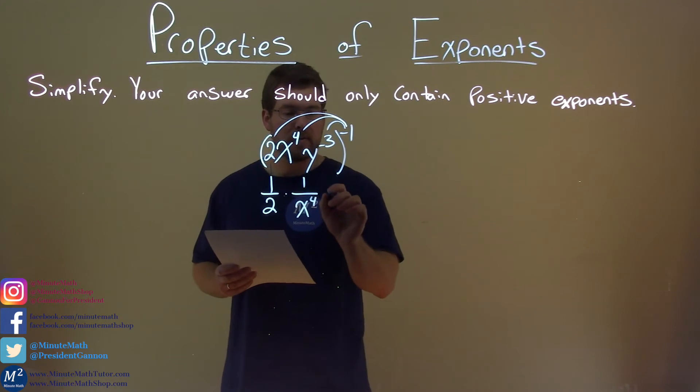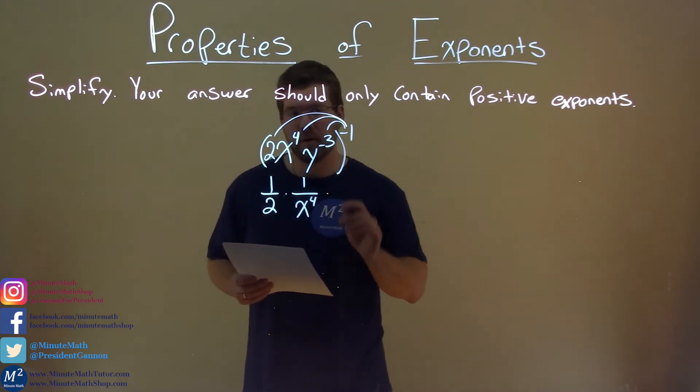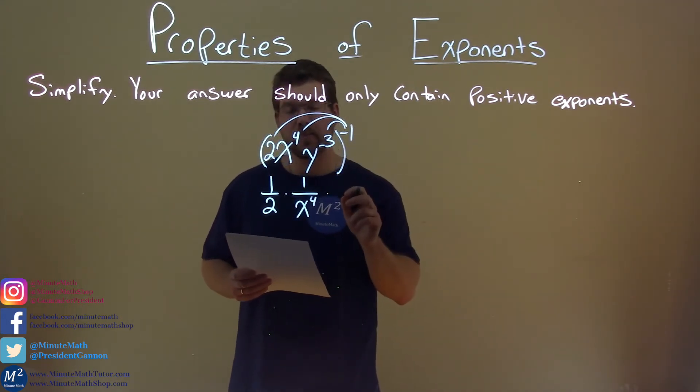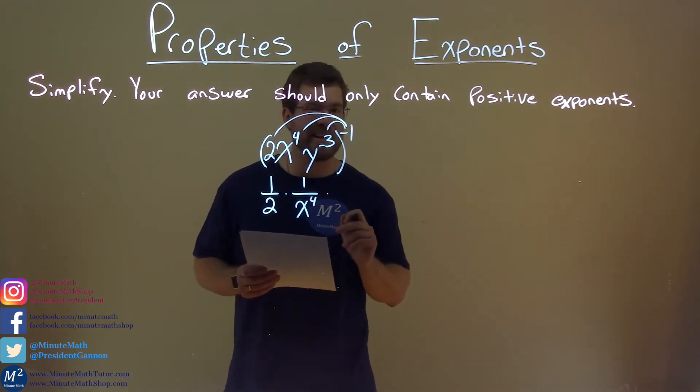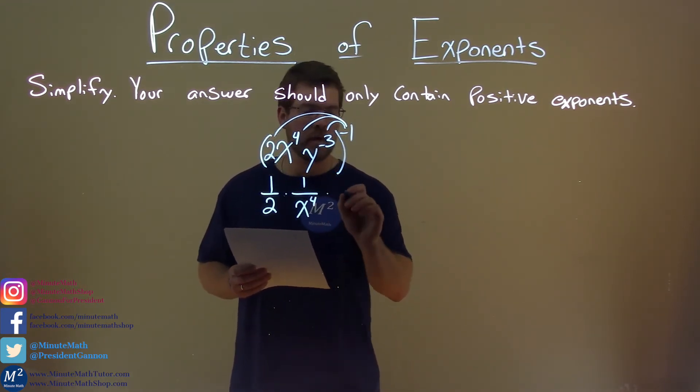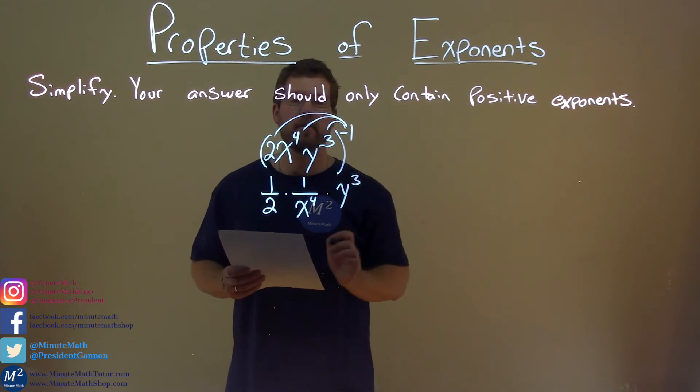Do the same thing with y's. y to the negative 3rd, all to the negative 1 power, multiply the exponents. Negative 3 times negative 1 is a positive 3. So we have y to the positive 3 power here.